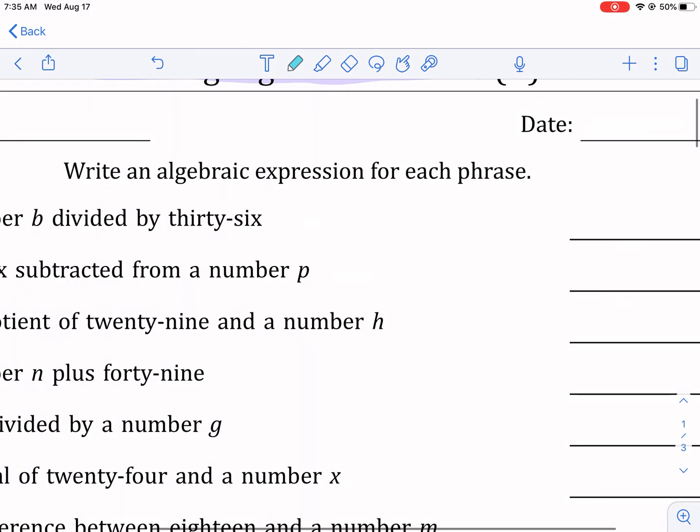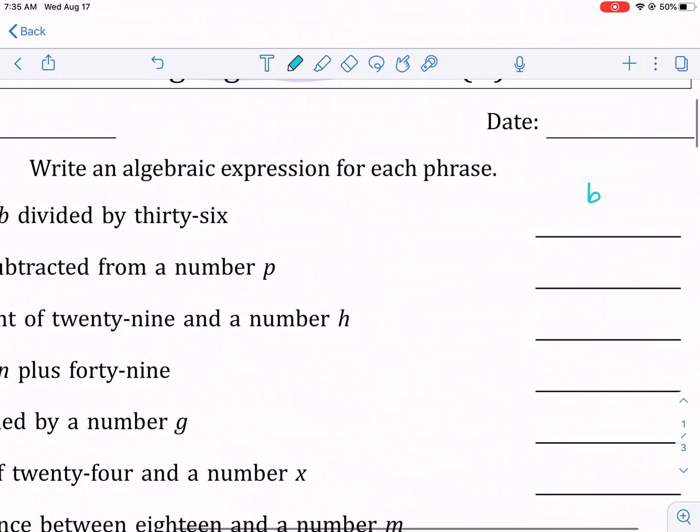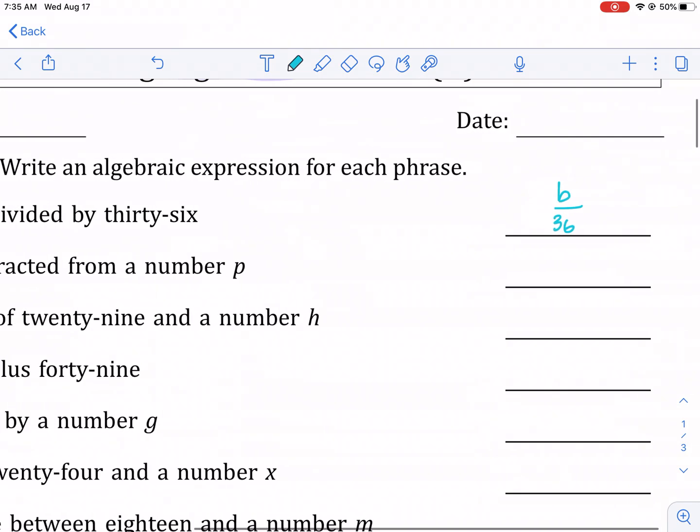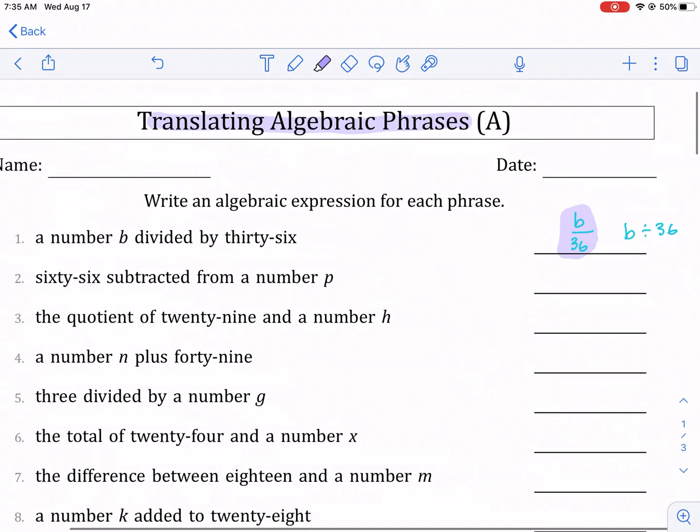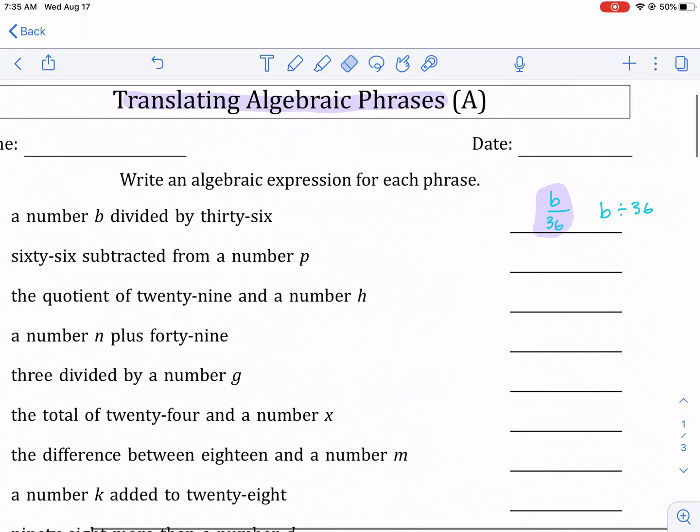So we're just gonna write b divided by 36, and you can write it like that as a fraction. If you want to write it like this, that's okay, but really this should be the preferred method because that's the same thing—that's division, that's a fraction—that means b divided by 36.